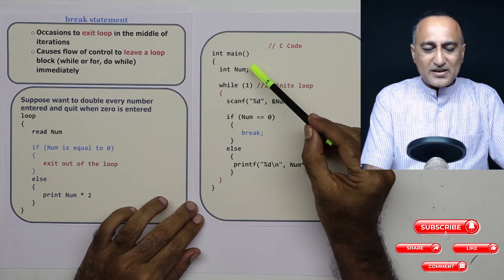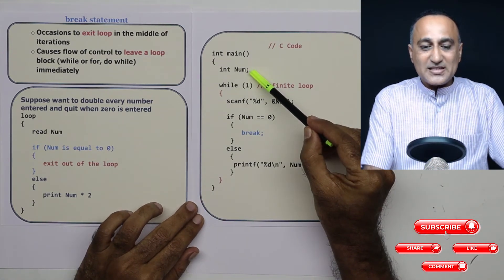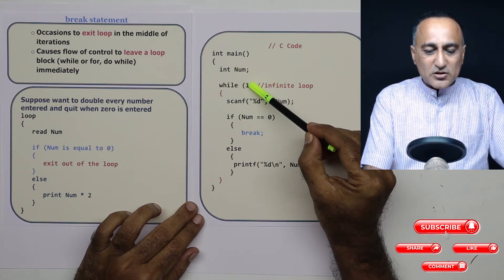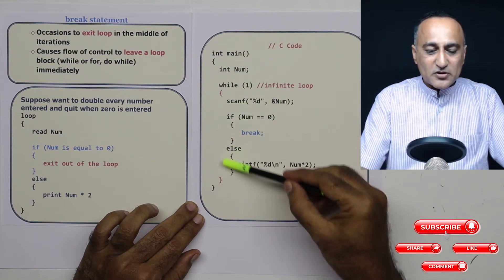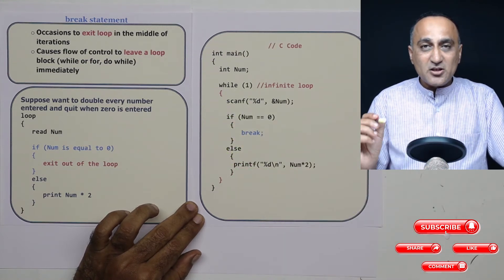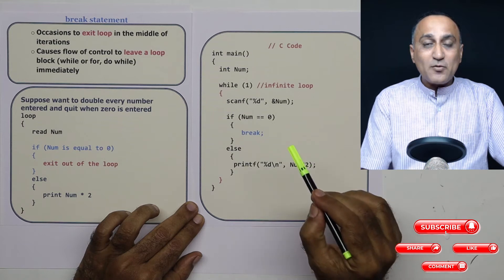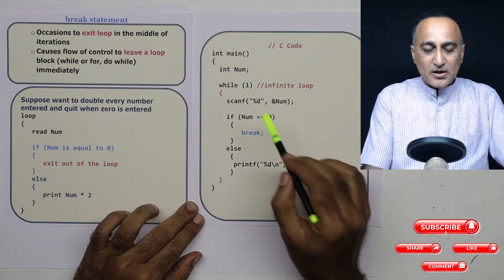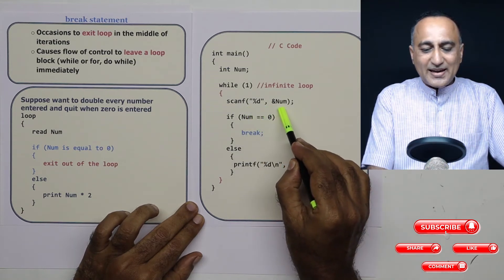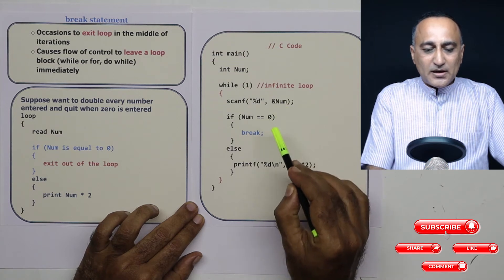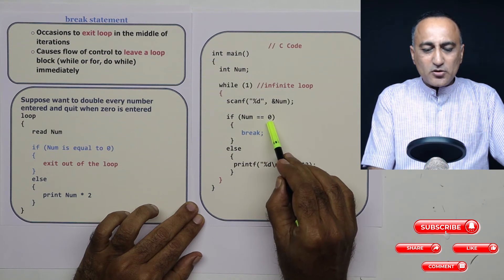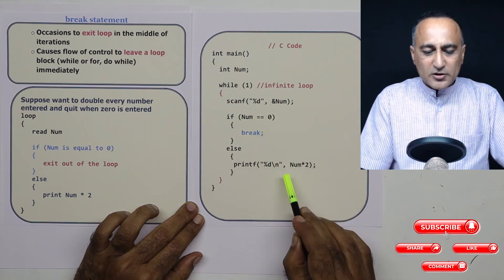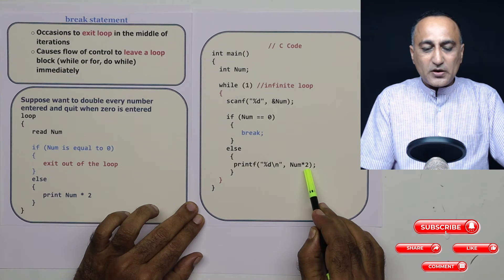So here I have defined a variable called as number. Here I have used a while one indicating that anything between this block is a number of statements which are going to be executed endlessly if I am not going to enter zero. So the first thing I do is I read a number. Assume I enter the number 10. Is 10 equal to 0? This condition is false. So it will print 10 into 2 is 20.